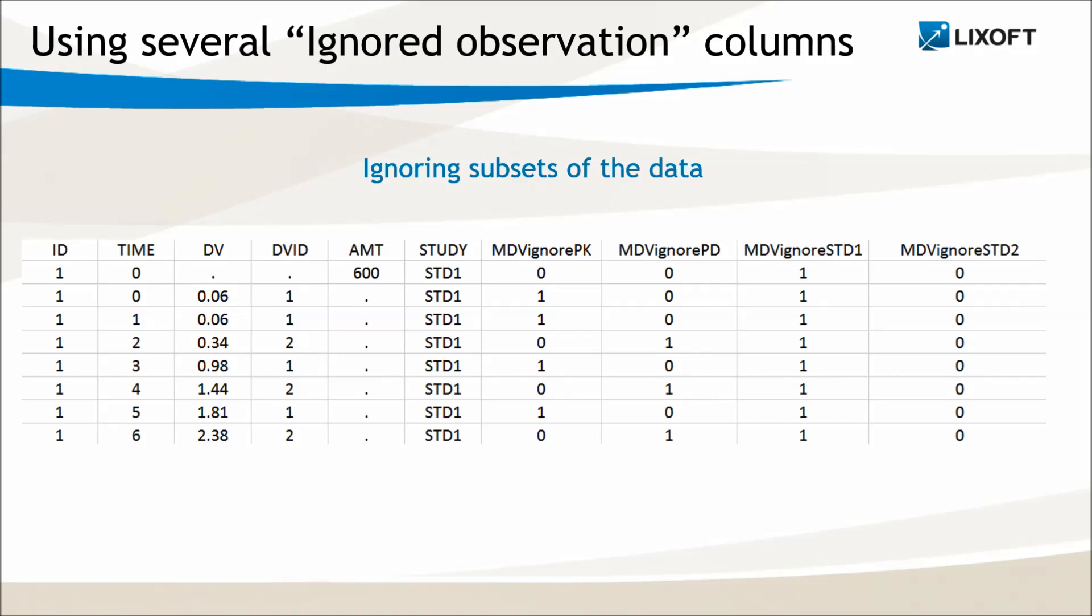And in the dataset, I have prepared four columns. The first one to ignore the PK data, the second one to ignore the PD data, the third to ignore study one, and the fourth to ignore study two.